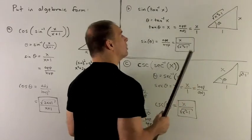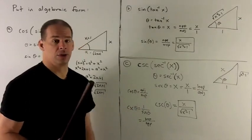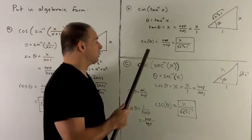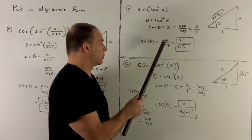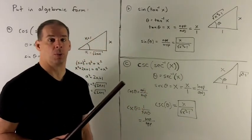So we have square root of x squared plus 1 for my hypotenuse. So we want to know the sine of this theta. That's just the opposite over the hypotenuse. So that'll be x over radical x squared plus 1.